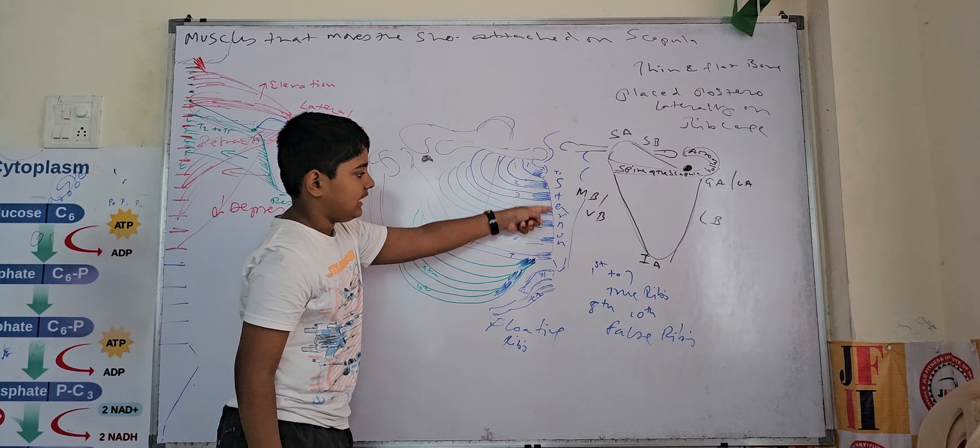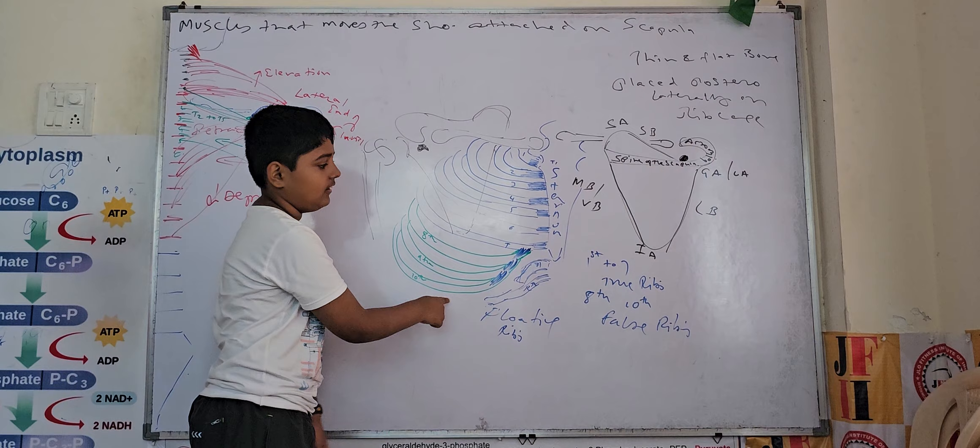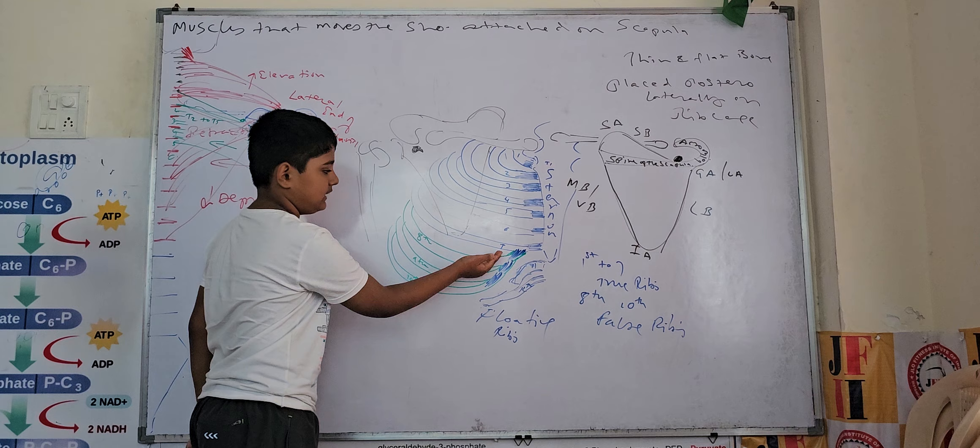From the 8th to 10th rib, they are called false ribs, because they are attached to the 7th rib, not the sternum. That's why they are called false ribs.